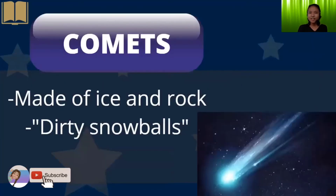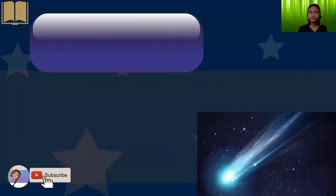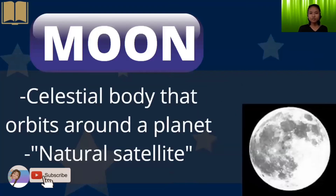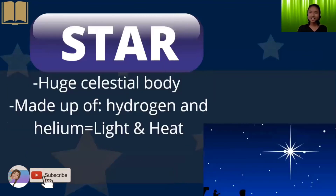Now, for comets — these are also known as dirty snowballs, and they are made of ice and rocks. Next, we have the moon, the celestial object that orbits around the planet. That's why it is called our natural satellite, or the Earth's natural satellite. Next, we have the star, a huge celestial body made up of hydrogen and helium. That's why it can give light and heat.